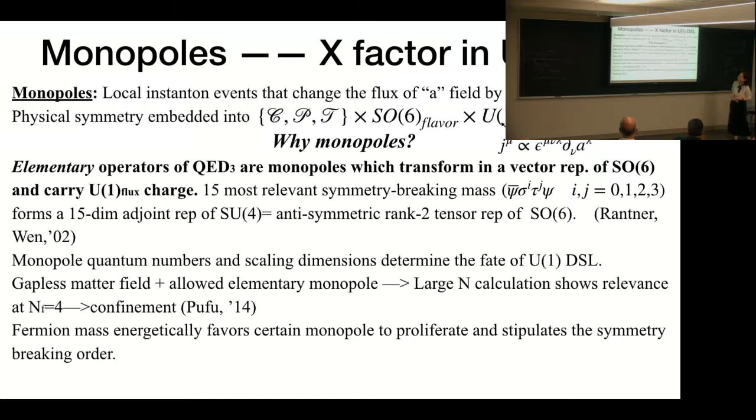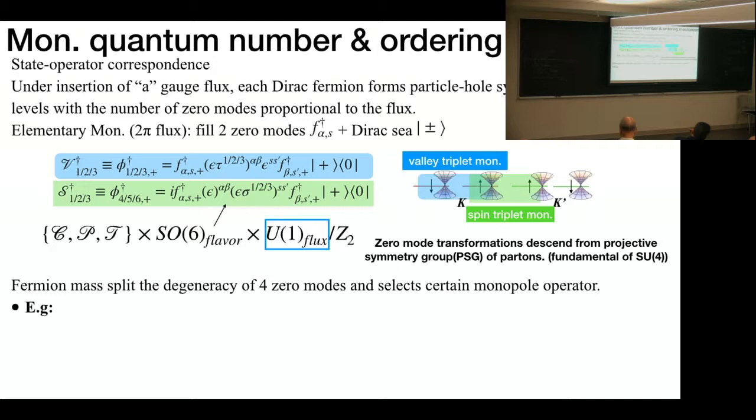Even if the monopoles are forbidden by symmetry, if the interactions are so strong that a symmetry-breaking mass is spontaneously generated, then a particular monopole will condense to proliferate. And the resulting order is actually stipulated both by the symmetry-breaking mass and the monopole. So we see it's very important to study the quantum number, the transformation property of monopoles.